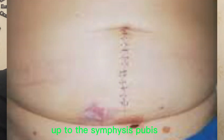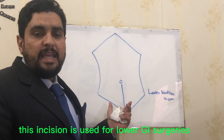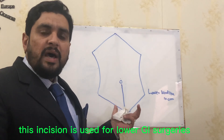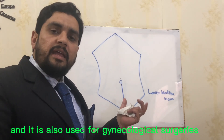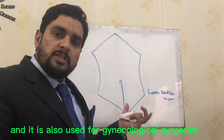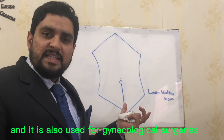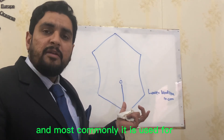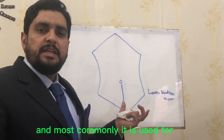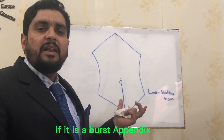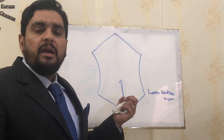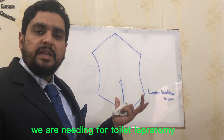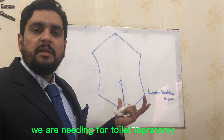Then we have the lower midline incision. It starts from the umbilicus up to the symphysis pubis. This incision is used for lower GI surgeries and also for gynecological surgeries, and most commonly it is used when there is a burst appendix or when we need a toilet laparotomy.